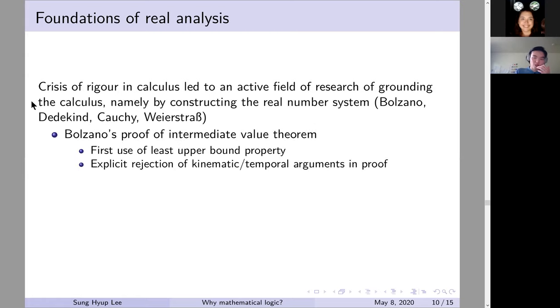Bolzano's proof of the intermediate value theorem, he, the original proof, in the introduction, he goes on a pretty lengthy tirade against the proofs of the time. He explicitly rejects the Newtonian method of kinematic or temporal arguments in proof. And this is also tied to his rejection of Kant's philosophy of mathematics. And this is also where we first see the use of the least upper bound property as a remedy, as a method of proof.